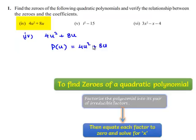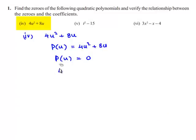In order to find the zeros of the polynomial, let us equate the given polynomial to 0, that is 4u² + 8u = 0. So we can take 4u as common: 4u(u + 2) = 0.